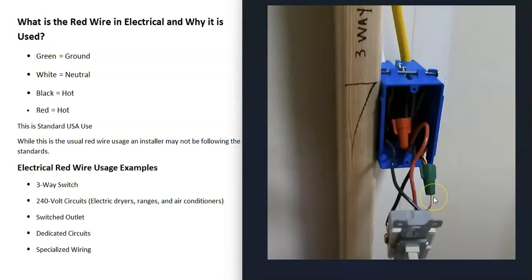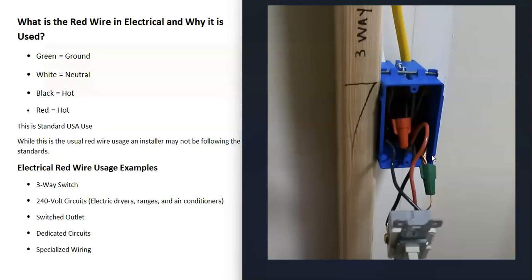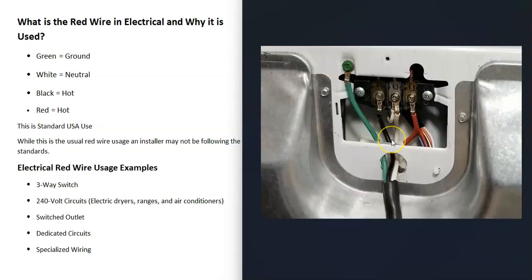Here's an example of a three-way switch. In this example, you have a hot wire coming in, and the red wire is going to an outlet. So when the switch is turned on, the power is going to travel down the red wire and go to the outlet, which will power it on.